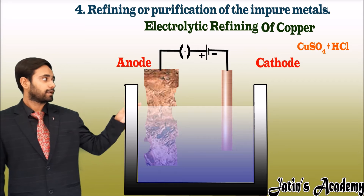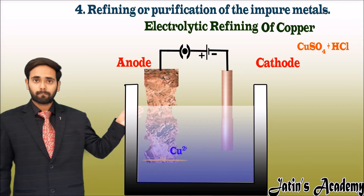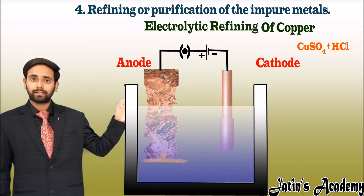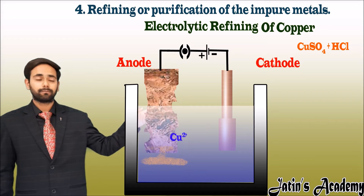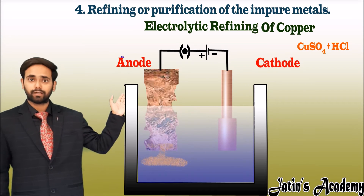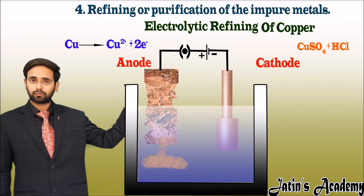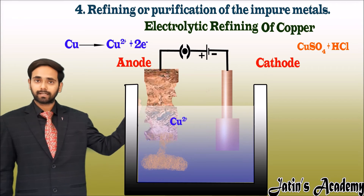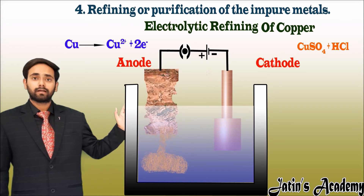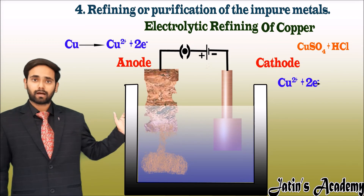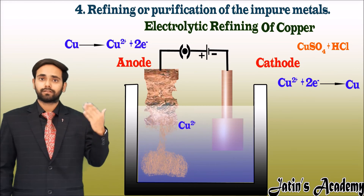After adding the electrolyte, switch on the circuit. You will observe that the copper atoms on the impure side detach from the impurities and become Cu²⁺ positive ions. On the anode side, copper metal loses two electrons to become copper two positive cations. These cations are attracted toward the cathode, where they gain two electrons and become copper metal, attaching to the surface of the pure copper.